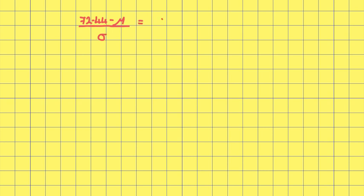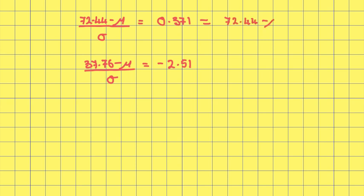Therefore I've got: (72.44 minus mu) over sigma equals 0.371. I've also got: (37.76 minus mu) over sigma equals minus 2.51. Rearranging these: 72.44 minus mu equals 0.371 sigma (equation 1), and 37.76 minus mu equals minus 2.51 sigma (equation 2).